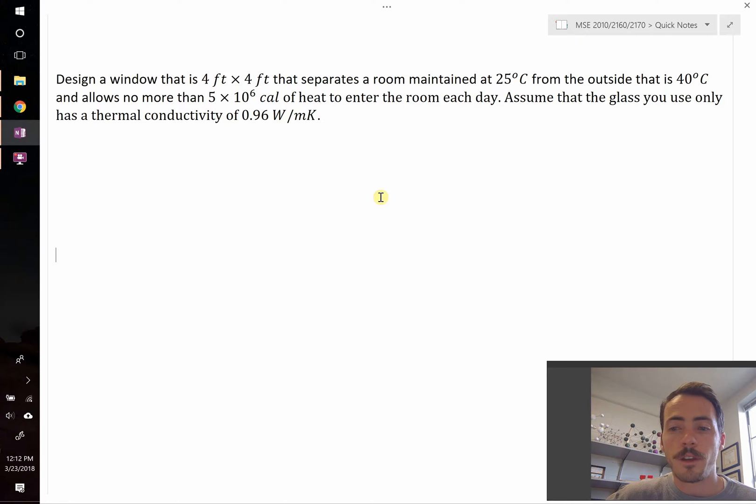As we go about starting to answer this question we're gonna have to make some assumptions. First off we're gonna assume that this is steady state heat flow, which means that it's not changing in respect to time. That's really saying is that we want the temperature inside the house to stay exactly at 25 degrees Celsius and the outside is always going to be at 40 degrees Celsius.